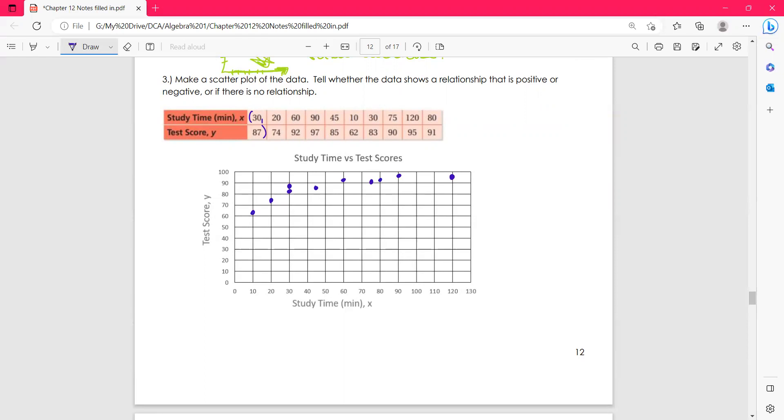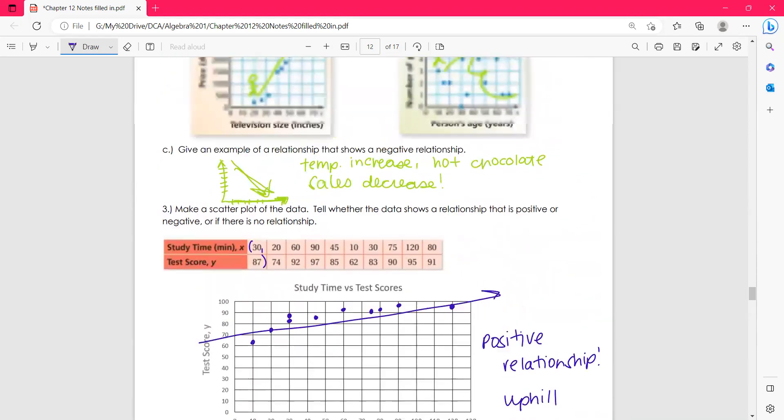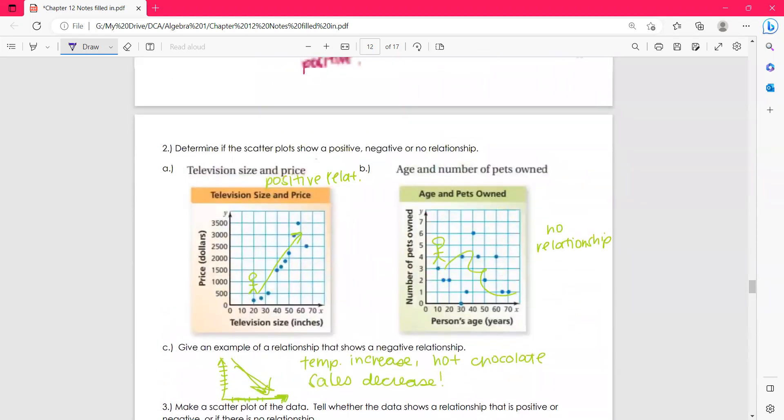And so when I look at this data, I can tell if I'm going left to right, there is a positive relationship, right? There is a trend going on here with the data. So we do have a positive relationship. The data does go uphill from left to right. Okay, this is where we're going to stop about talking about scatterplots for now and their relationships, whether it be positive, negative, or no relationship. Thanks for watching, guys.